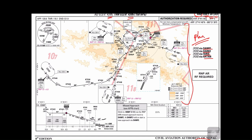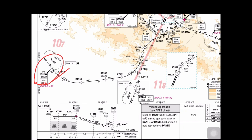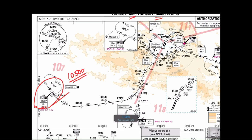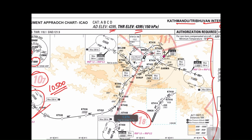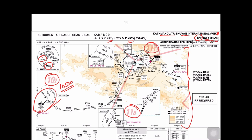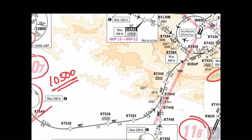Starting with DAFE: if you are reporting at DAFE, which is an IAF (Initial Approach Fix), you should not be less than 10,500 feet. All safe altitude heights are mentioned at each waypoint on the chart. The number one circle is the 10 nautical mile circle on the approach chart. At the 10 nautical mile point, you fly at 11,100 feet.